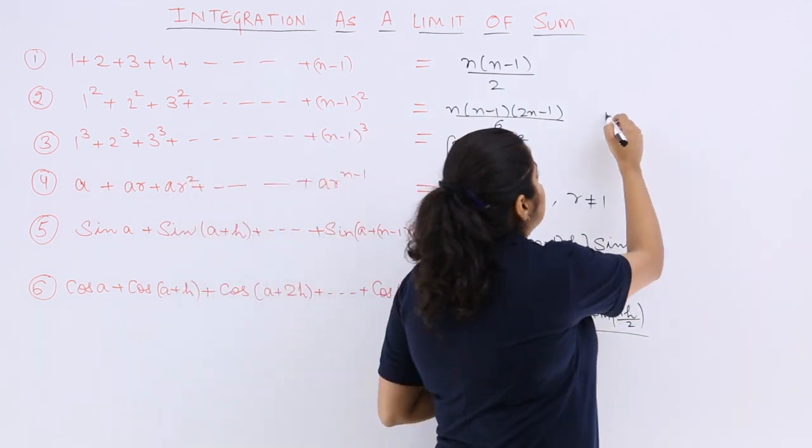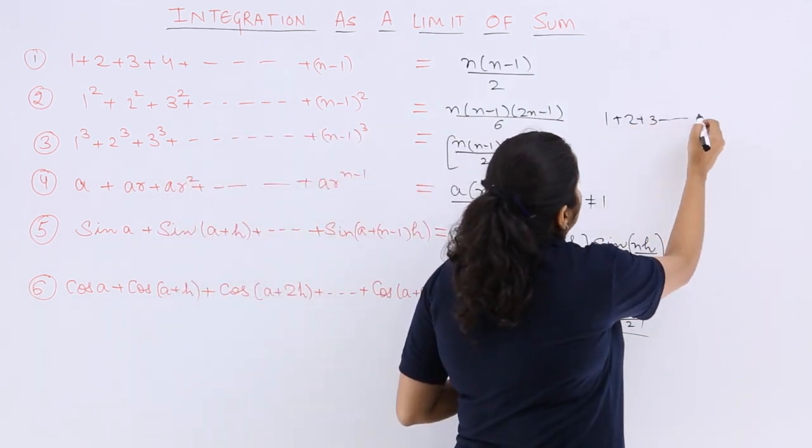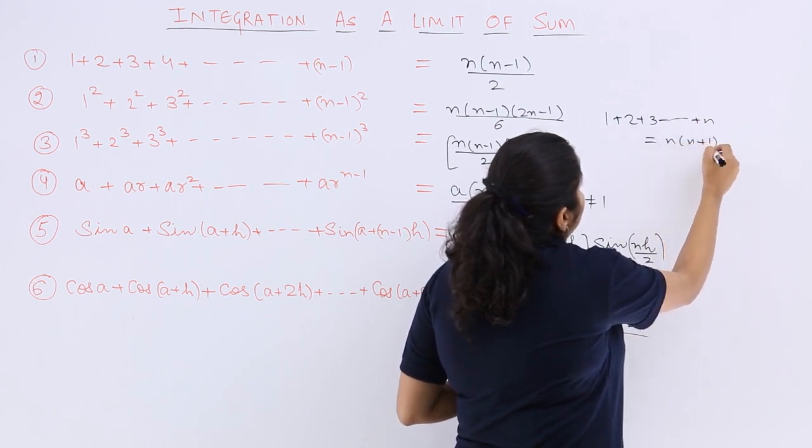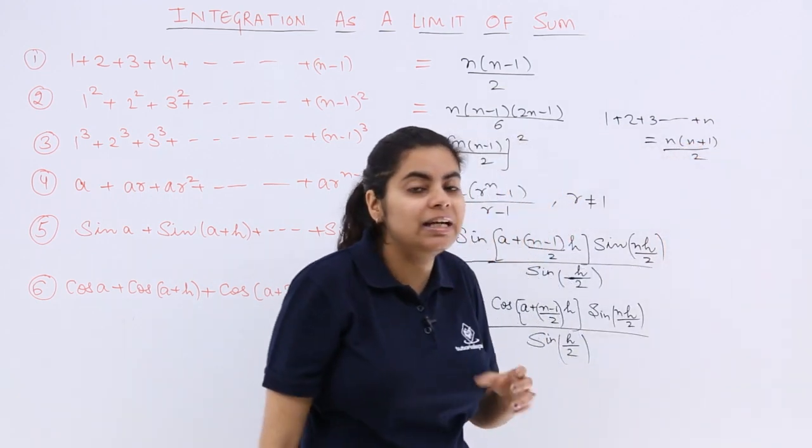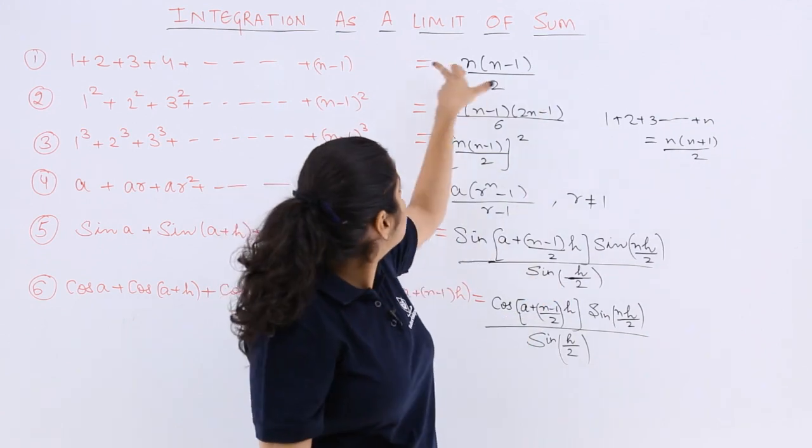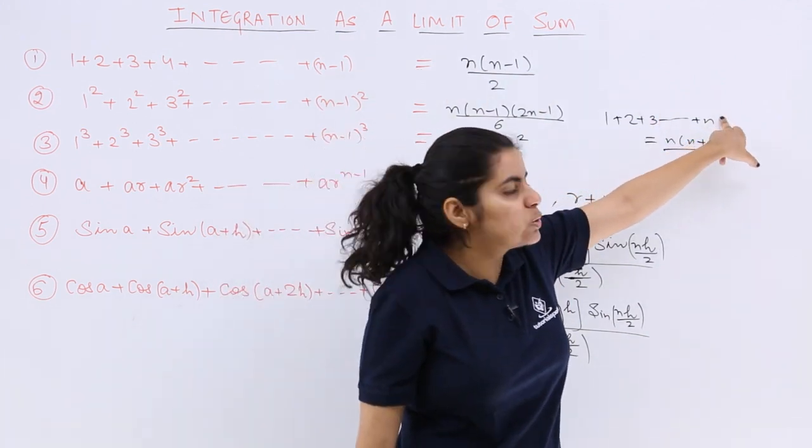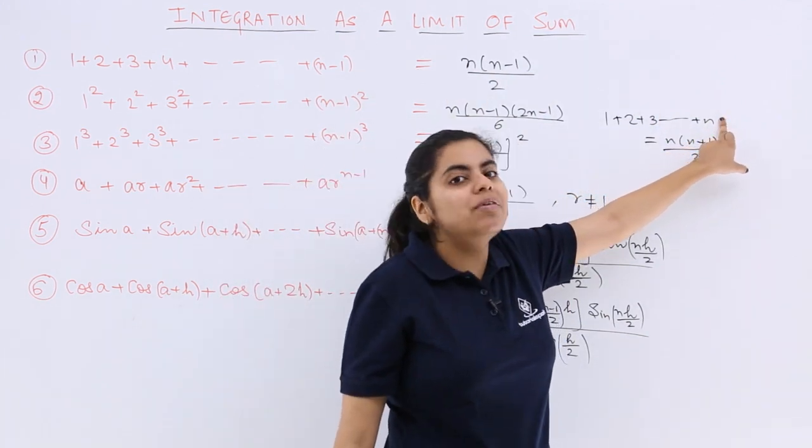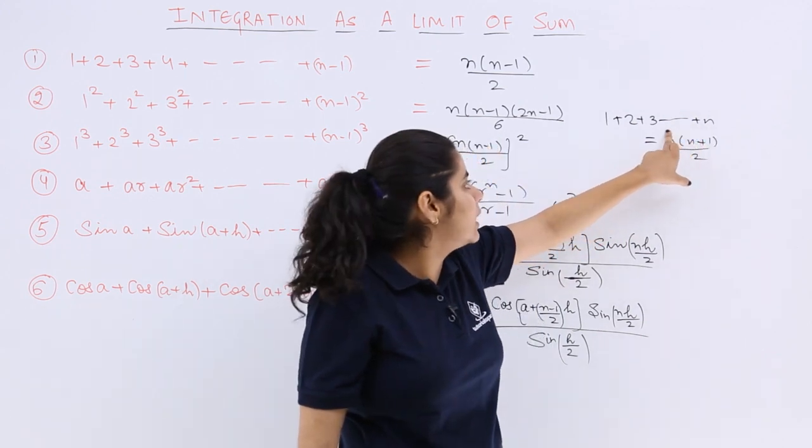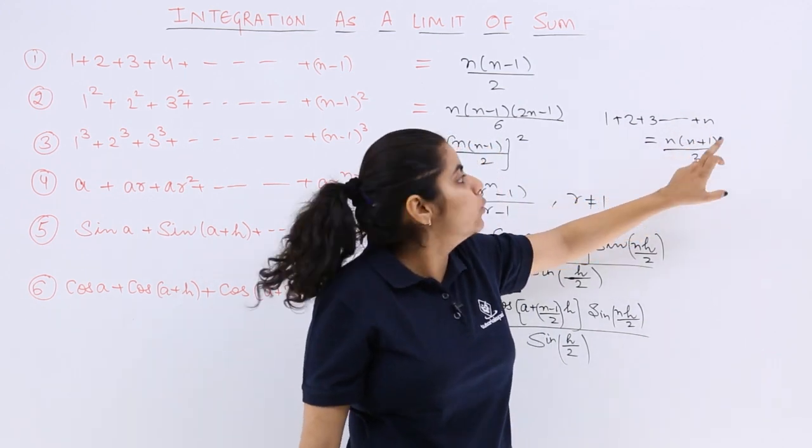This is derived from 1 plus 2 plus 3 till n. It was n into n plus 1 by 2 that we studied in our previous classes. Here it is not n but n minus 1. So wherever you have n substitute n minus 1. This becomes n minus 1, this becomes n upon 2.